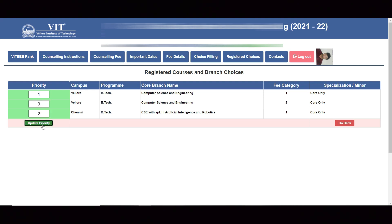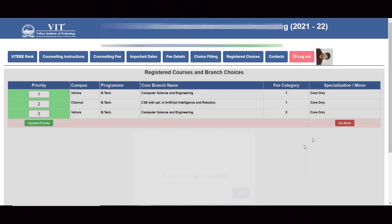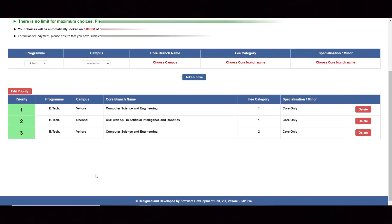If you update the priority and go back, if you see the choices are shuffled. This is of Chennai, not of Vellore. This is how it works regarding choice filling.